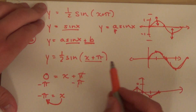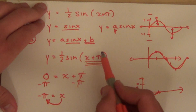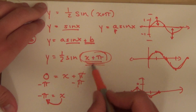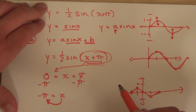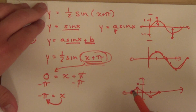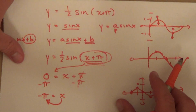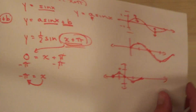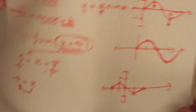The most important thing to note is that the original starting value was at zero. So I make a simple equation, setting the argument equal to zero, to find what the phase shift is. Let's do another example to continue with this.